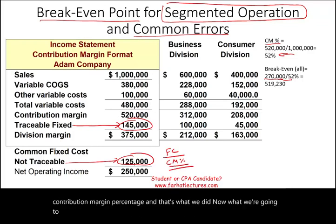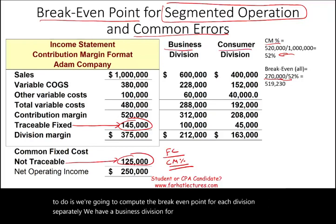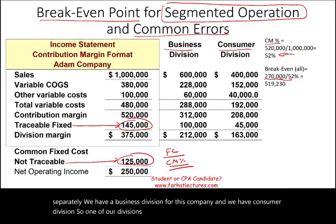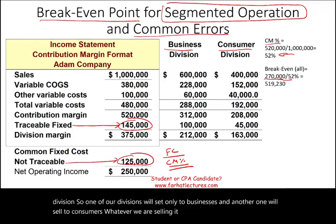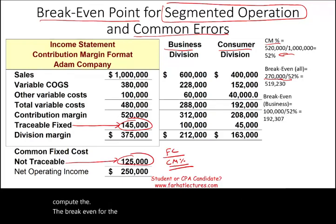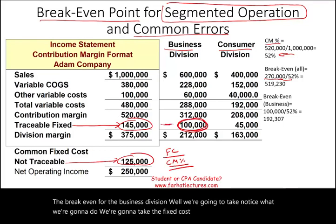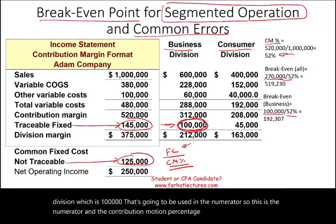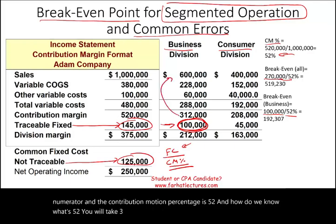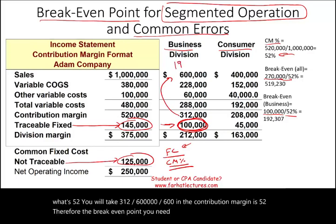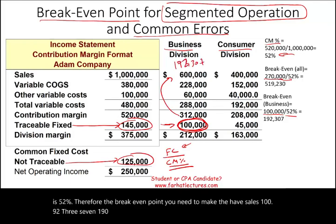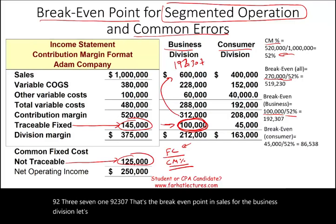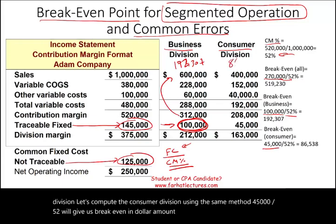Now we compute the break-even point for each division separately. This company has a business division and a consumer division — one sells to businesses, the other to consumers. For the business division, we use the traceable fixed cost of $100,000 as the numerator, divided by the contribution margin percentage of 52% (computed as 312 divided by 600, giving 52%). This yields a break-even point in sales of $192,307. For the consumer division, $45,000 divided by 52% gives a break-even of $86,538.